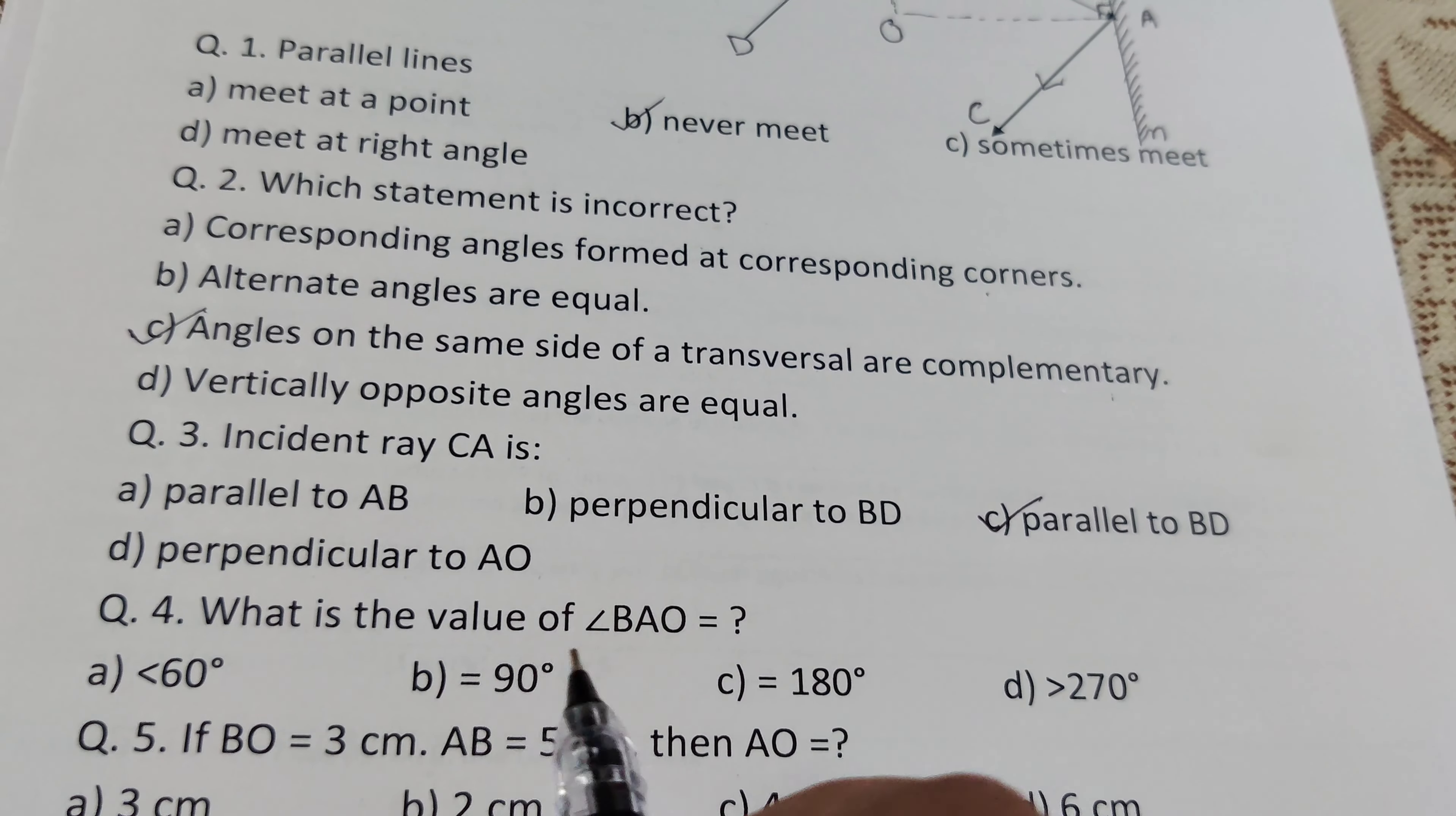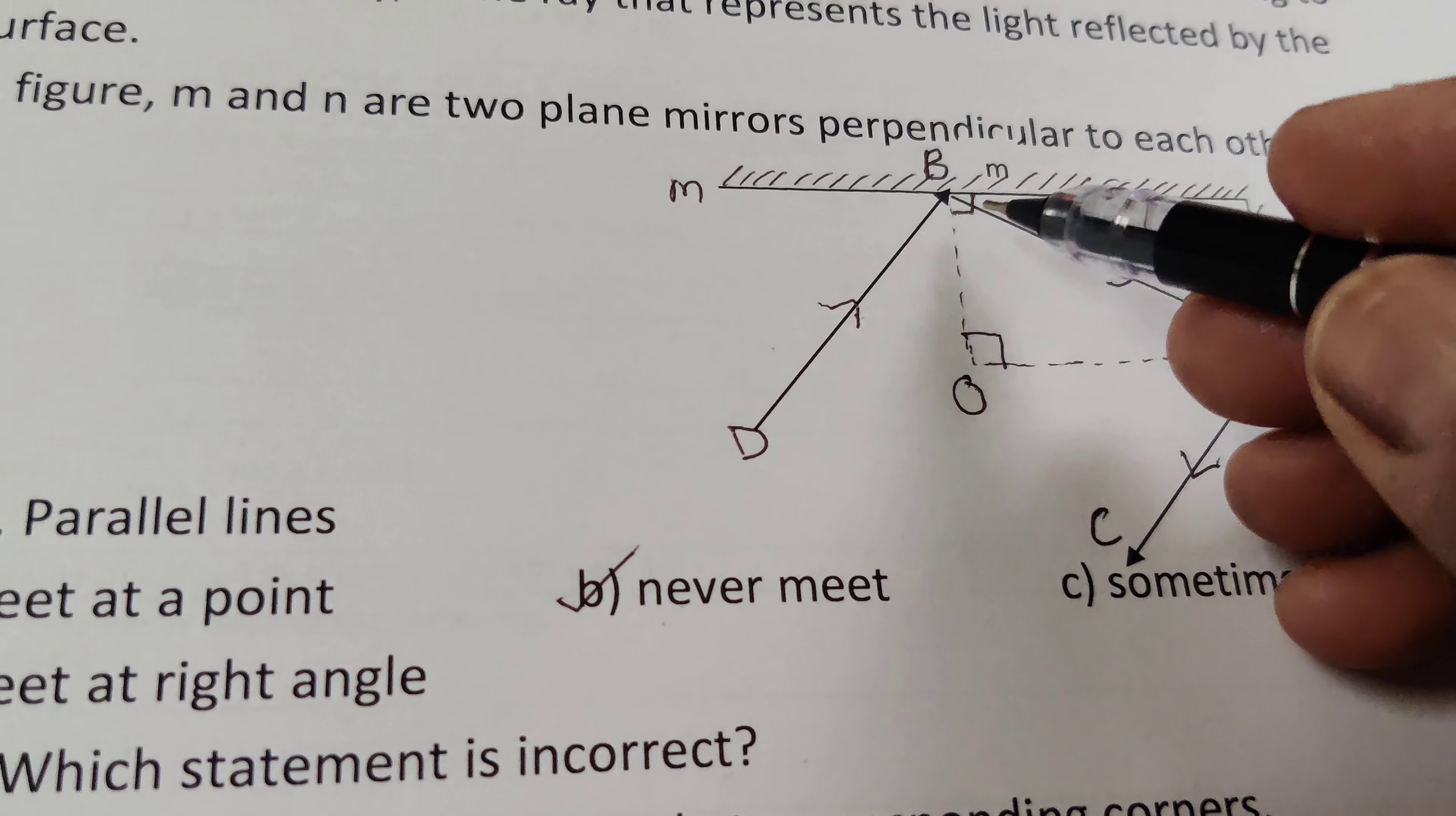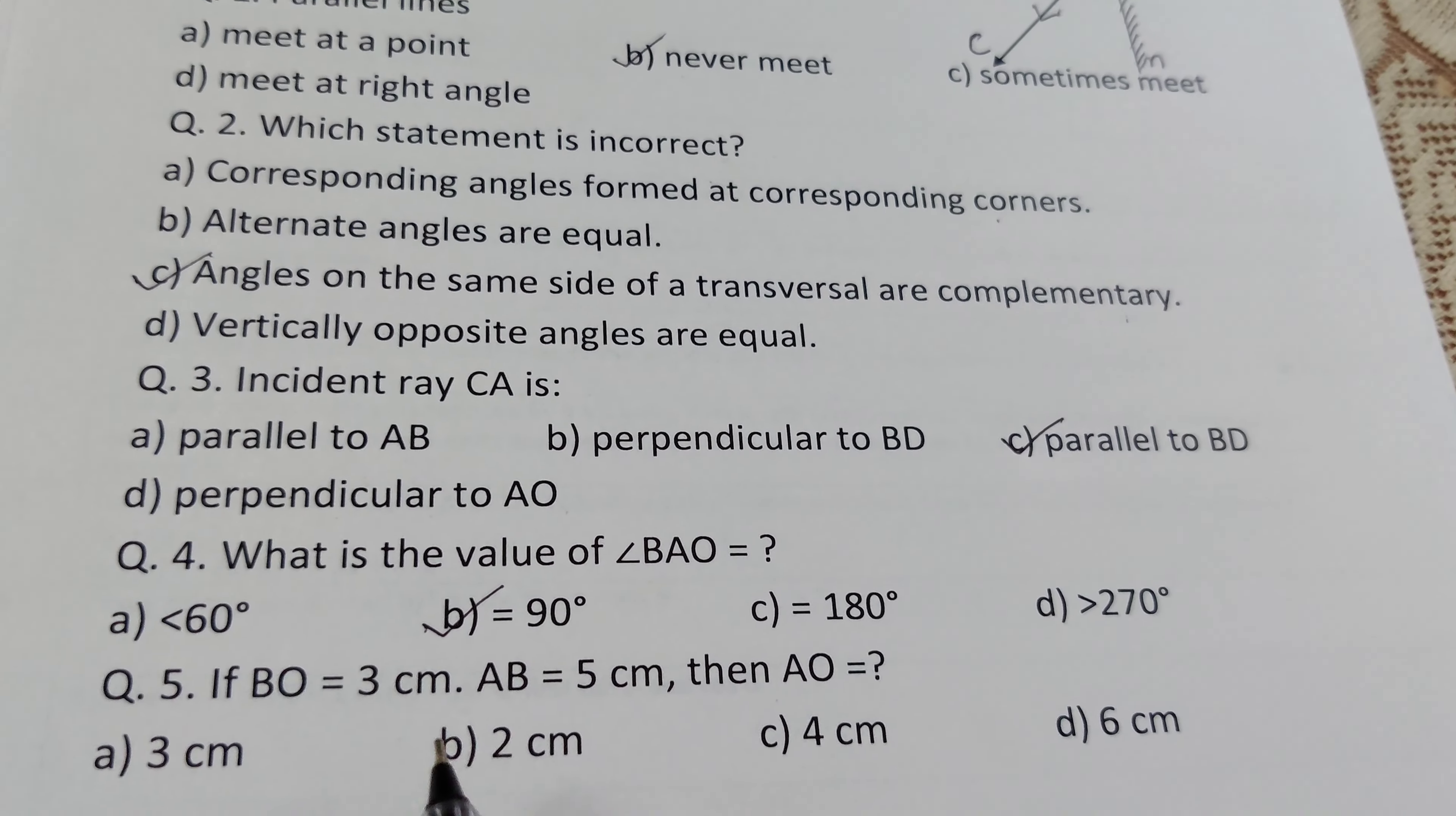What is the value of angle BAO? There are two perpendiculars AO and BO. Find the measure of angle BOA. Two perpendiculars - this angle is 90 degrees, this is 90 degrees. Similarly this is 90 degrees. Therefore BOA equals 90 degrees. B option is right.